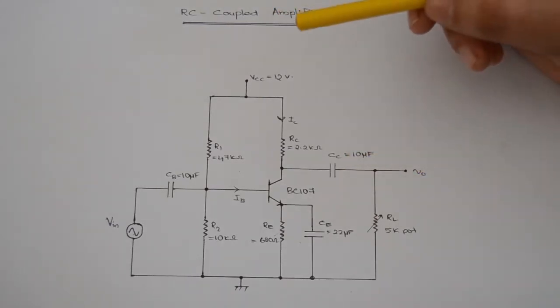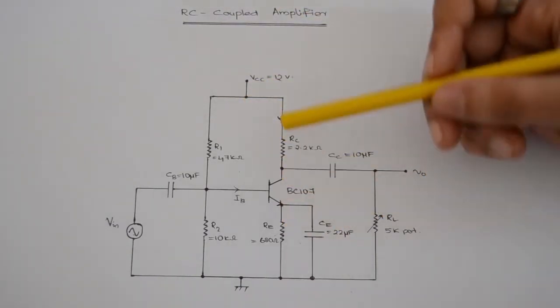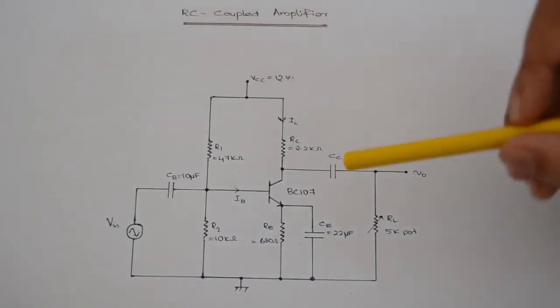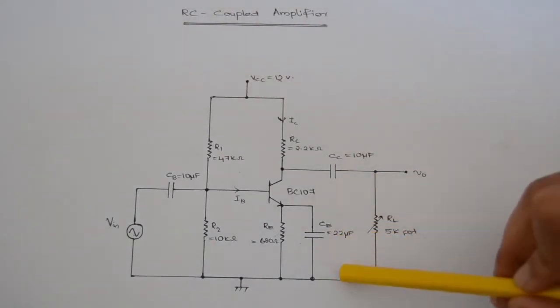Current series feedback is used in the circuit using RE. It stabilizes the operating point against temperature variation. The purpose of the bypass capacitor CE is to bypass signal to the ground.